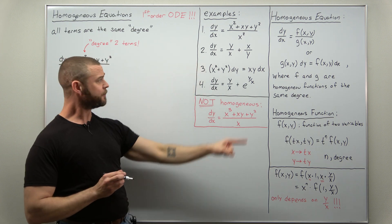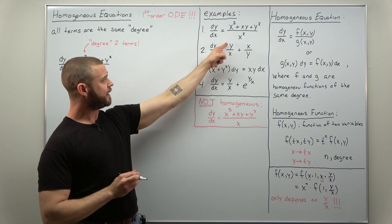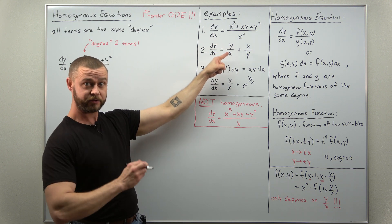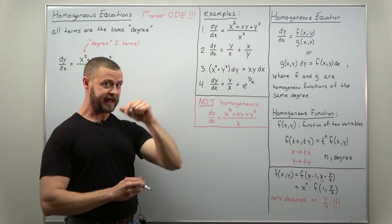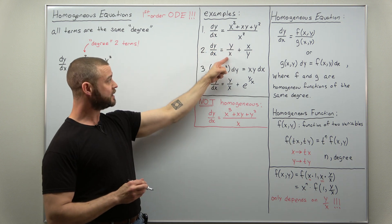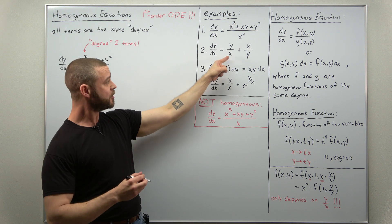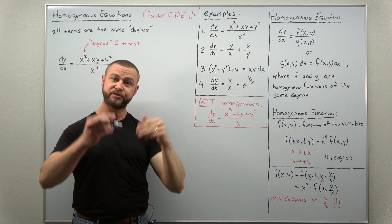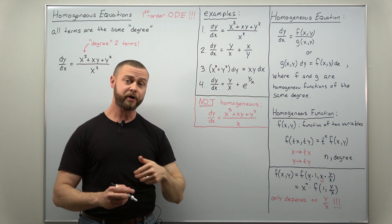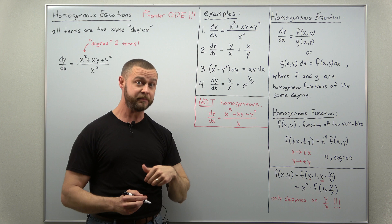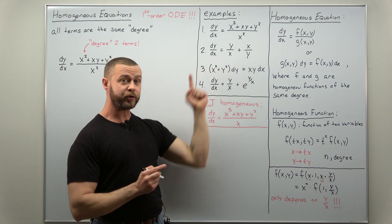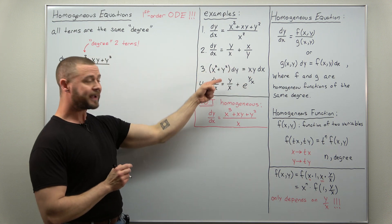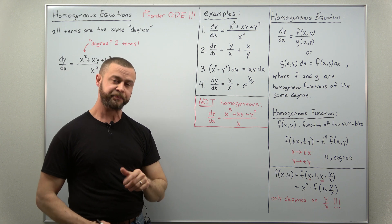For the second example, we have a degree one y to the one divided by another degree one x to the one. We can say that term is of degree zero, and that one is also of degree zero. So again all the terms are of the same degree here — they're all degree zero terms — and that continues through the other examples.